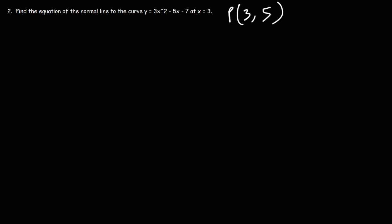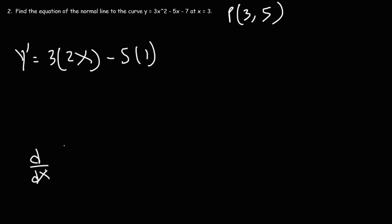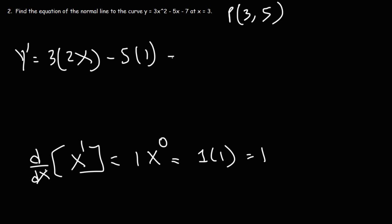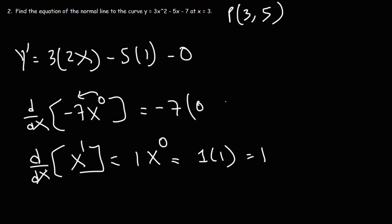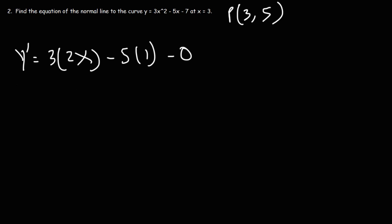Now we calculate the first derivative to find the slope of the tangent line. The derivative of x squared is 2x, and the derivative of x is 1 — because applying the power rule: 1 times x to the 0 equals 1. The derivative of the constant negative 7 is 0, since negative 7 equals negative 7 times x to the 0, and moving the 0 to the front gives zero. So the first derivative of 3x squared minus 5x minus 7 is 6x minus 5.